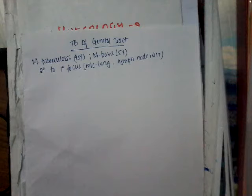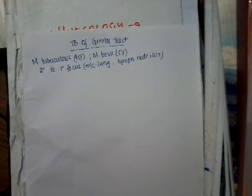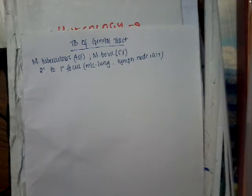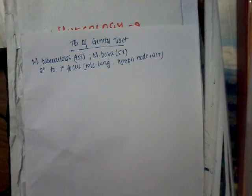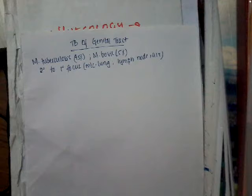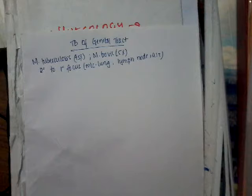Primary genital tuberculosis is rare; most commonly it occurs due to secondary bacterial tuberculosis. A rare case has been described in some areas where saliva is used as lubrication prior to intercourse. If that saliva contains Mycobacterium tuberculosis bacilli due to primary pulmonary infection, there is a chance of infection spreading to the genital tract.